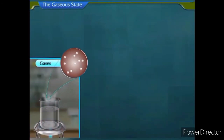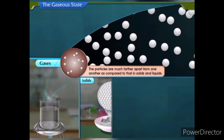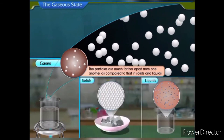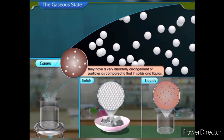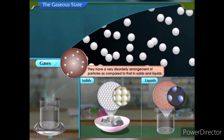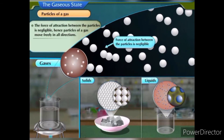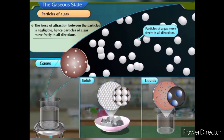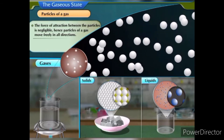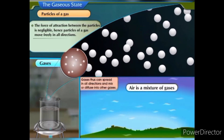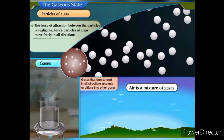In gases, the particles are much farther apart from one another compared to solids and liquids. They have a very disorderly arrangement of particles. The force of attraction between the particles is negligible. Hence, particles of a gas move freely in all directions. Gases can spread in all directions and mix or diffuse into other gases.